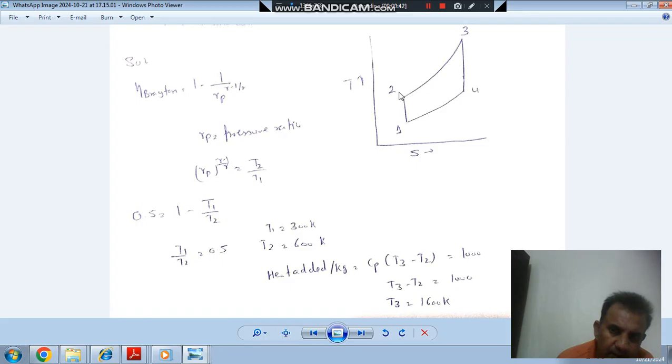So this is your ideal Brayton cycle: isentropic compression, constant pressure heat addition, isentropic expansion, and constant pressure heat rejection. The efficiency of this Brayton cycle is 1 - 1/(Rp^((γ-1)/γ)). Here Rp is your pressure ratio and γ = 1.4, taking air as the working fluid.